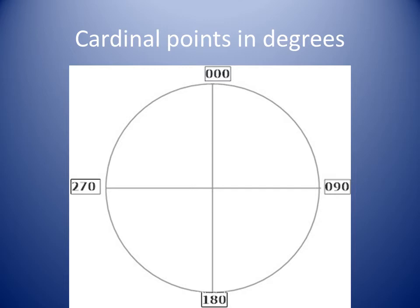I strongly recommend that you get in the habit of using three-digit notation when speaking about compass direction. It is easy for someone to hear thirteen degrees when thirty degrees is said, but it is impossible to confuse zero one three with zero three zero.